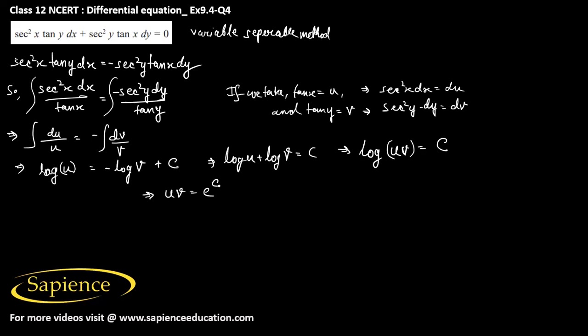So that will be also some constant c. So this thing I can also write it as some constant c. So uv equals to constant. So u means tan x and v means tan y. So I can write tan x into tan y that is equals to constant. So this is the required general solution of this given differential equation.